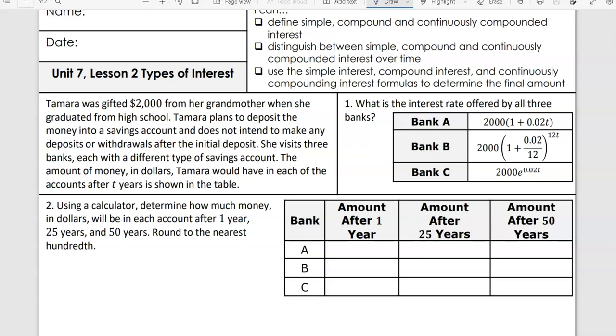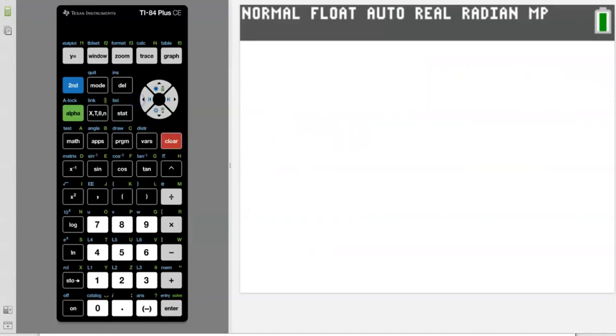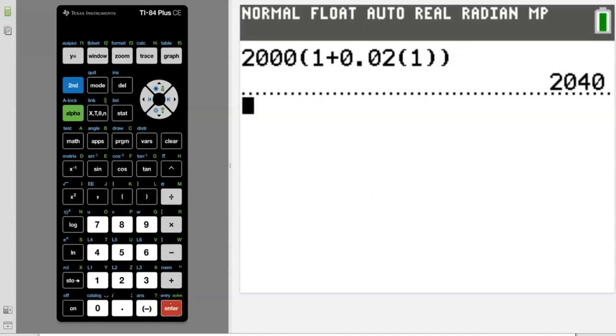We're going to use our calculator to determine how much money we're going to have after 1, 25, or 50 years. I'm going to show you how to type these in. So that first one, clear it out. We have 2,000, parentheses, 1 plus 0.02. This T is now a 1, so I'm replacing it with a 1 and closing my parentheses. When we push enter, we get a total of $2,040 for year 1.